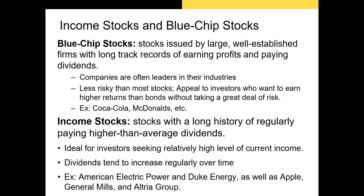We also have income stocks, sometimes referred to as dividend stocks since they pay higher than average dividends. These stocks are ideal for investors seeking relatively high levels of current income. Dividends are often very consistent and slightly increased through time. Utilities firms like American Electric Power and Duke Energy are regularly profitable with very low volatility in earnings, allowing them to sustain a constant dividend. An example of a blue chip income stock is Altria, the largest cigarette manufacturer in the US — formerly Philip Morris — which rebranded after lawsuits in the 1990s and spun off its international operations into Philip Morris International in 2008.